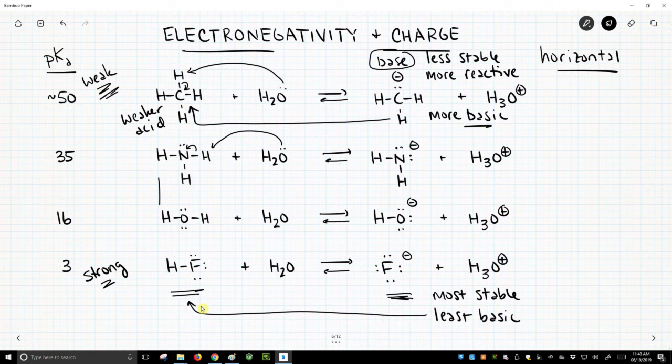To apply this rule for electronegativity, we need to be strictly moving across the periodic table. We can't go diagonally; we have to look at a horizontal trend. Increased electronegativity corresponds to a greater stabilization of charge.